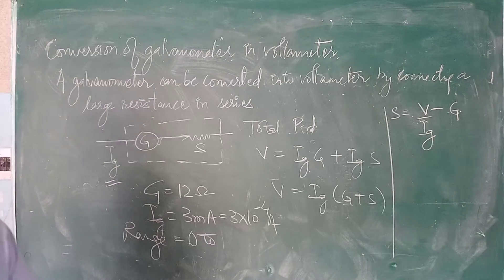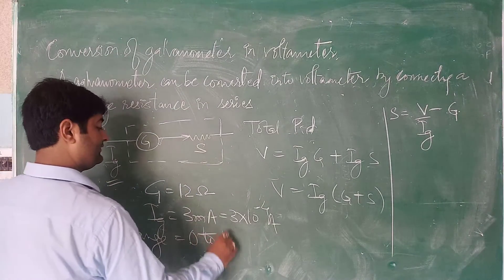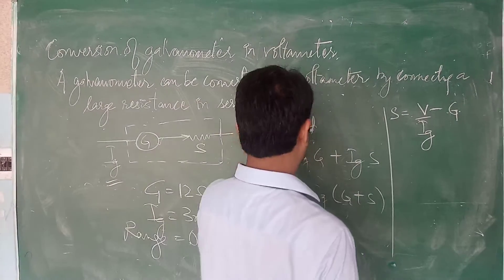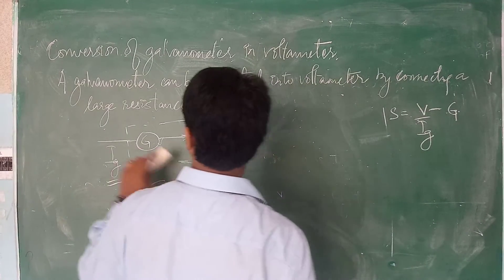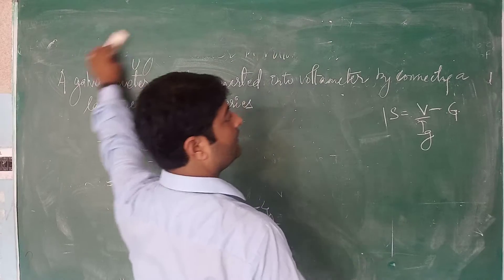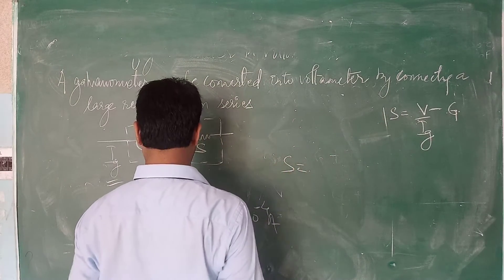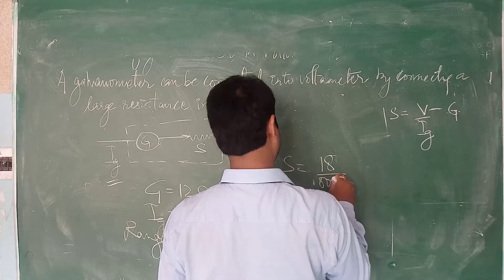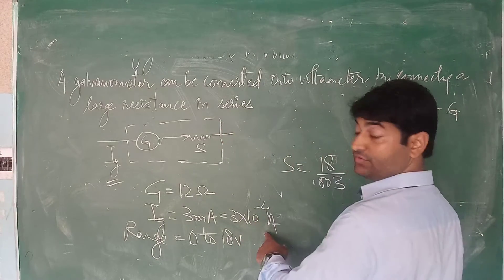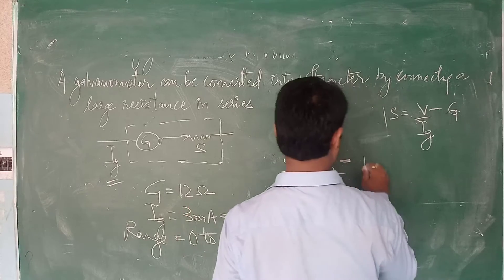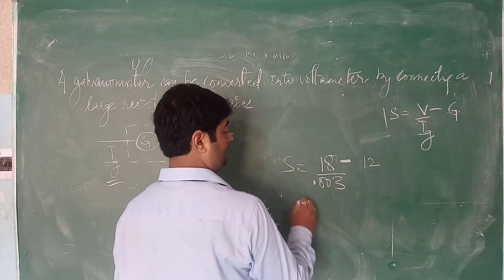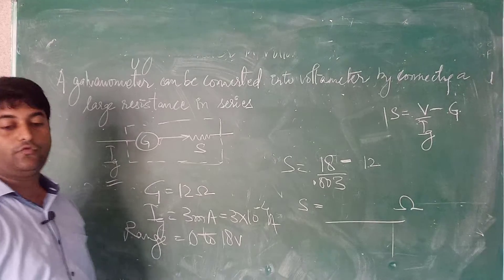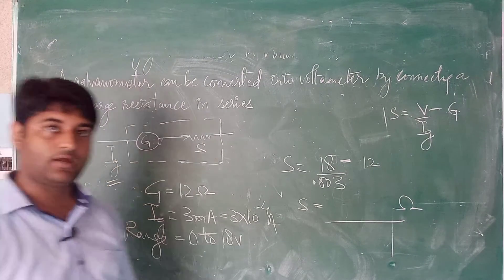The range is 0 to 18 volt. The value of S equals V upon Ig minus G, which equals 18 divided by 0.003, minus 12. I will tell you the answers for 4.27 and 4.28 so you can post your working in the comment box.